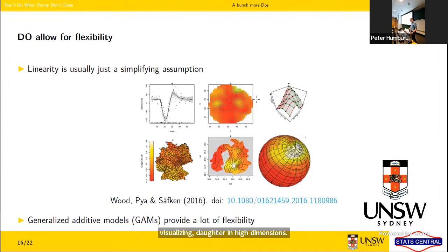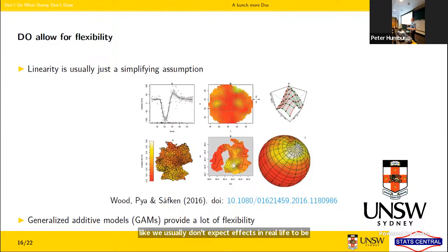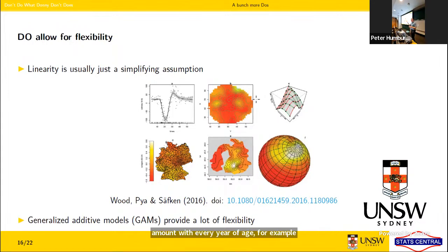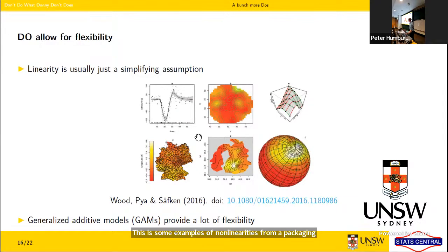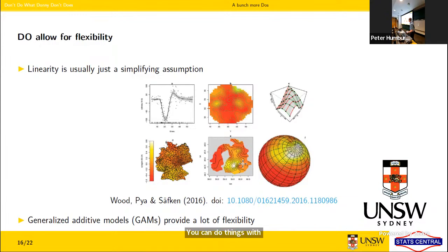Do allow for flexibility if you can afford it. Linearity is usually just a simplifying assumption — we don't expect effects in real life to be linear; your risk of disease doesn't go up the same amount with every year of age. If you've got enough data, allow for nonlinearities. These examples show two-dimensional and three-dimensional nonlinearities, spatial correlations, all handled by a generalized additive model, which allows a lot of flexibility — the 'additive' replacing the normal 'linear'.